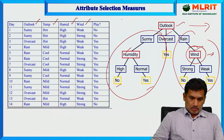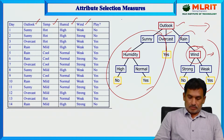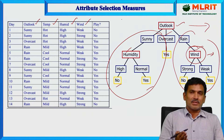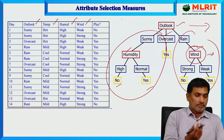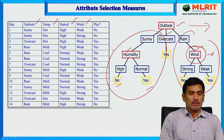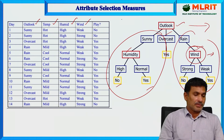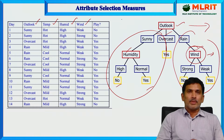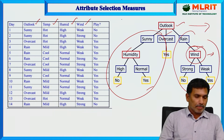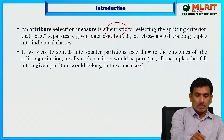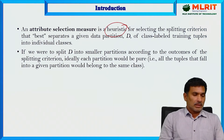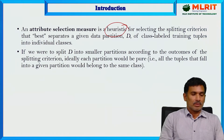Let us understand how information gain would be used to select an attribute that best partitions the tuples in the dataset. Rows are called tuples, samples, or observations. Columns like outlook, temperature, humidity, and wind are called features, characteristics, or attributes. An attribute selection measure is a heuristic for selecting the splitting criteria that best separates a given data partition D of class labels — the training tuples — into individual classes.